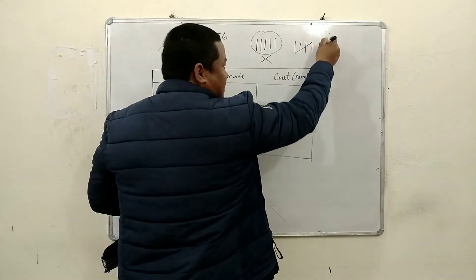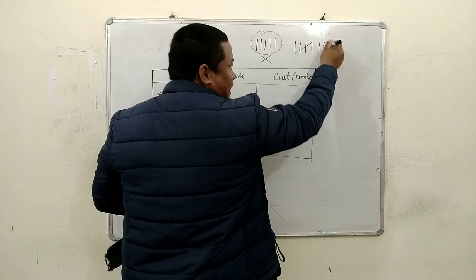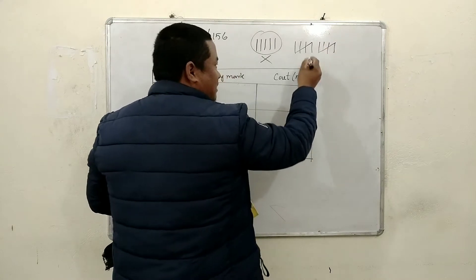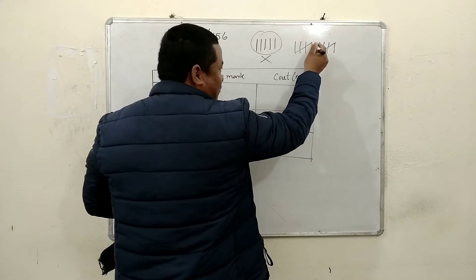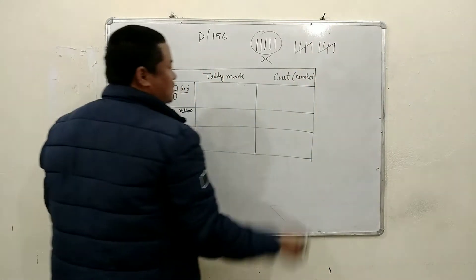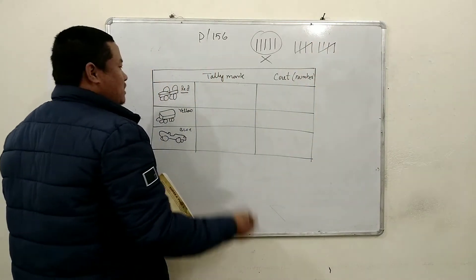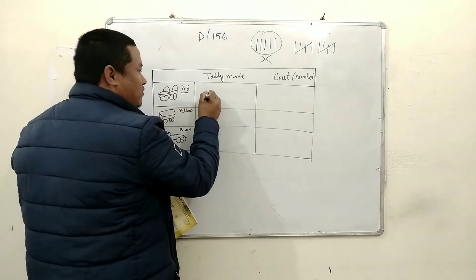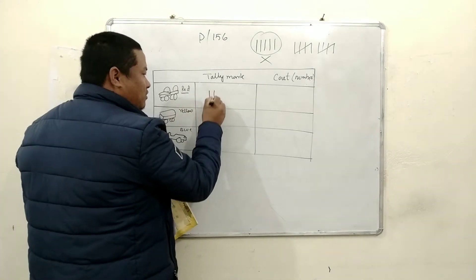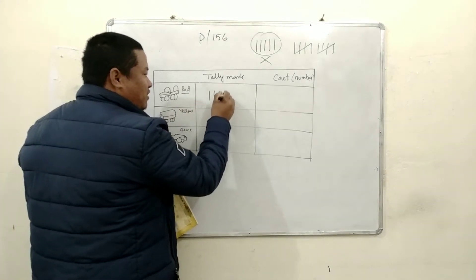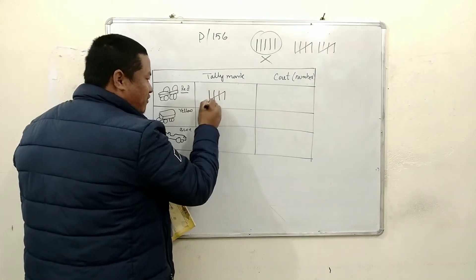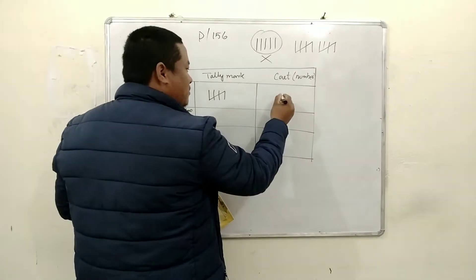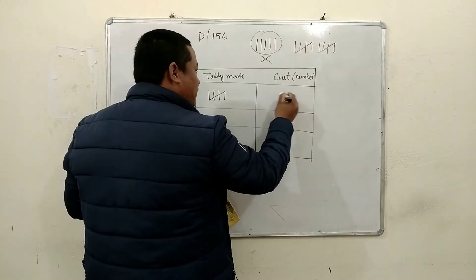That means for 5, we have to cross in this way — 6, 7, 8, 9, 10. So red is 5. In tally marks: 1, 2, 3, 4, 5. And in number, we will write 5.